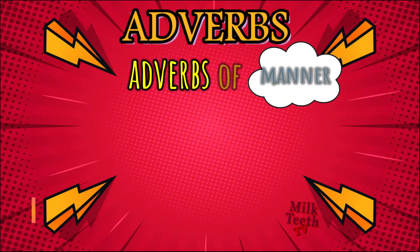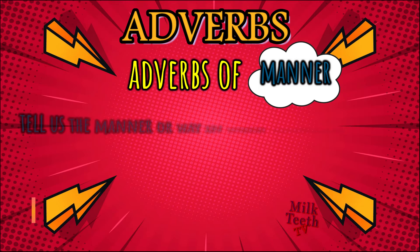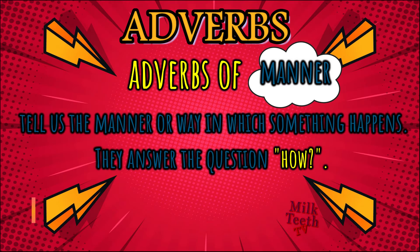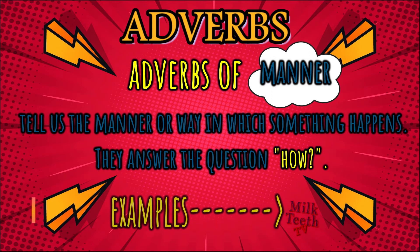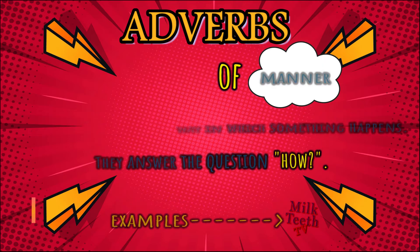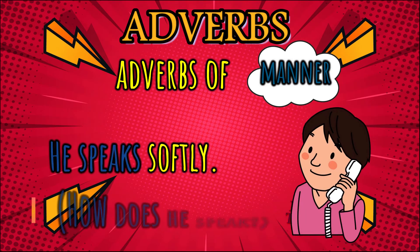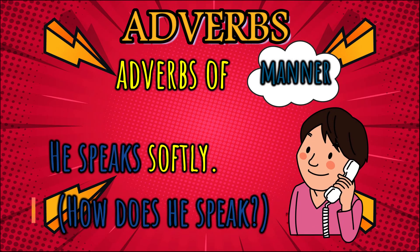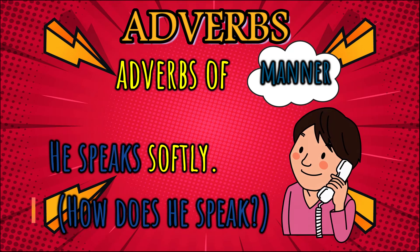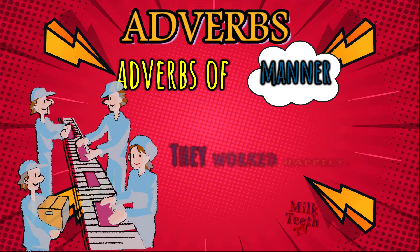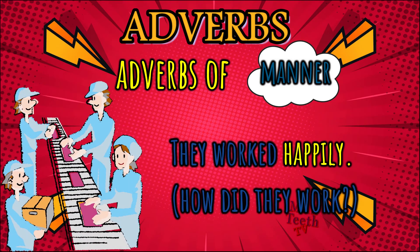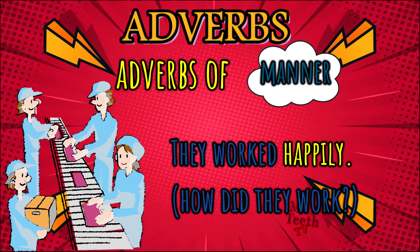Adverbs of manner tell us the manner or way in which something happens. They answer the question 'how.' For example: he speaks softly — how does he speak? Softly. So 'softly' is the adverb of manner. They worked happily — how did they work? Happily. 'Happily' is the adverb of manner.